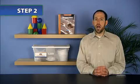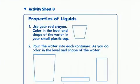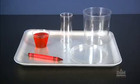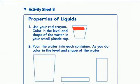Next, distribute a copy of activity sheet 8 and a red crayon to each student and give a sorting tray of items to each team. Inform students that you have added some food color into the water to make it easier to see. Then have students complete question 1 of the activity sheet.